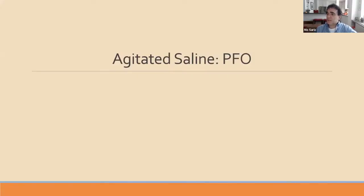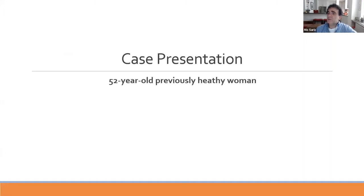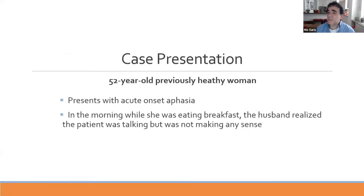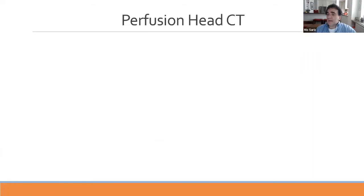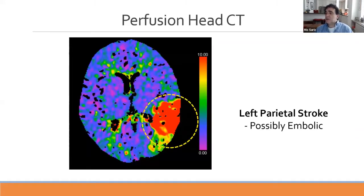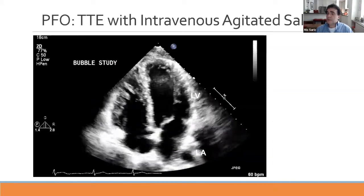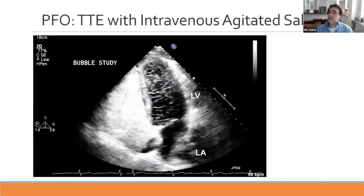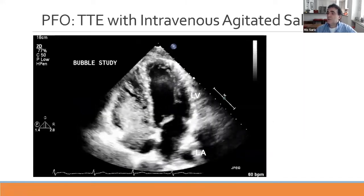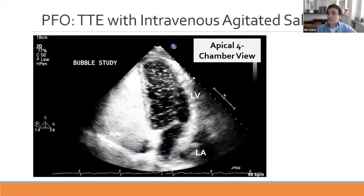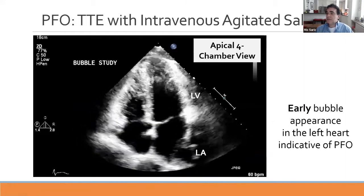Here is a case of agitated saline used to detect a patent foramen ovale: a 52-year-old previously healthy woman presenting with acute onset aphasia. Her husband noticed she was talking but not making sense at breakfast. She was brought to the emergency department, had a head CT showing no bleed, and received a thrombolytic agent. Her perfusion CT shows a large parietal stroke, possibly embolic. Her bubble study shows early appearance of a large number of bubbles in the left heart, consistent with a patent foramen ovale on an apical four-chamber view.